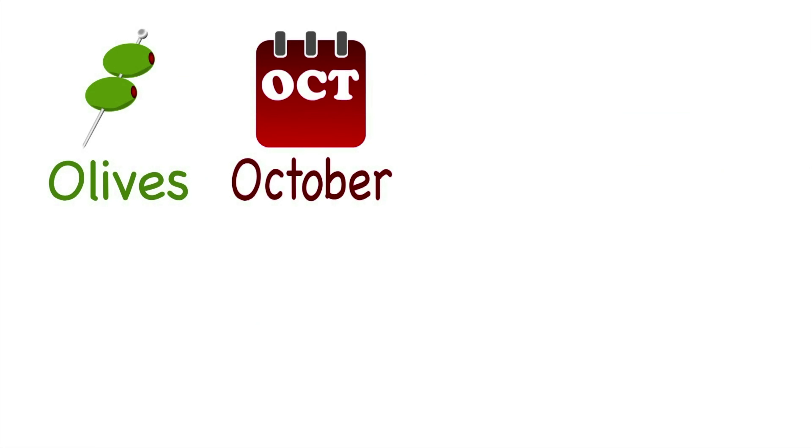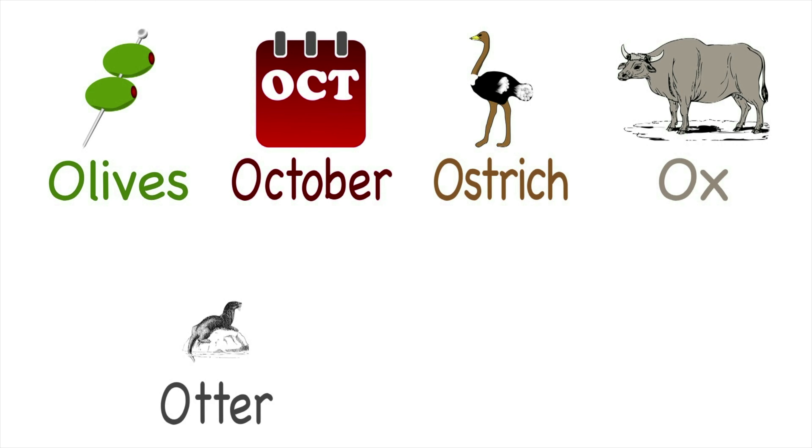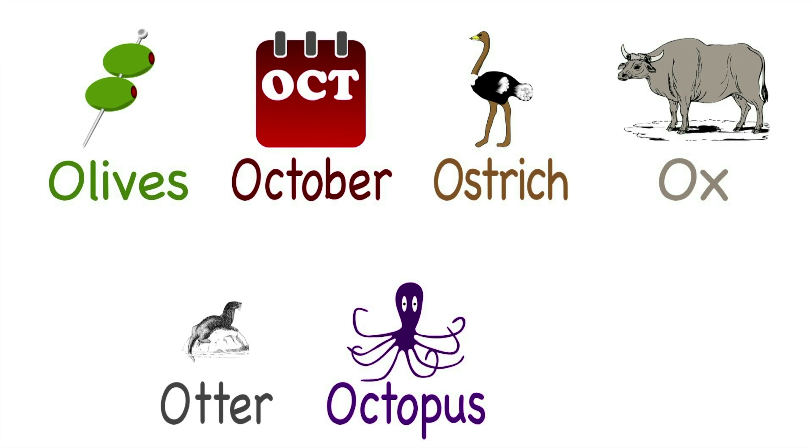Cool! Let's review the letter O. This is a capital O, and this is a lowercase o. Remember, the letter O looks like a circle. O makes the sound O O. Like olives, October, ostrich, ox, otter, octopus, and octagon. Hey kids, thanks for watching Tea Time with Tayla! Be sure to subscribe and click the bell to be notified of brand new videos. And parents, visit TeaTimeWithTayla.com to learn how Tayla can help celebrate your child's birthday. See you next time!